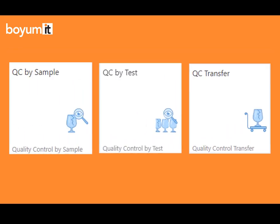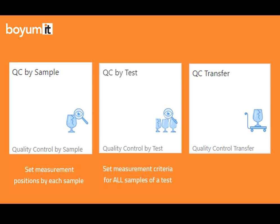They have been designed to aid the quality control process where you can register quality control orders by each sample or by test. In the QC by sample app you can set measurement positions to meet the requirements of a testing, while in the QC by test you can set measurement criteria that apply to all samples within a test. All you need for using them is your BES License in the quality control area. Let's look at how they work.